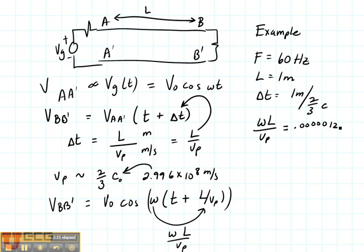But let's take that same 1 meter line and consider what happens if the frequency is 1 gigahertz, typical of your computer speeds. In that case, the same line has a phase delay of 20.94 radians. That is a lot. That's a long line.